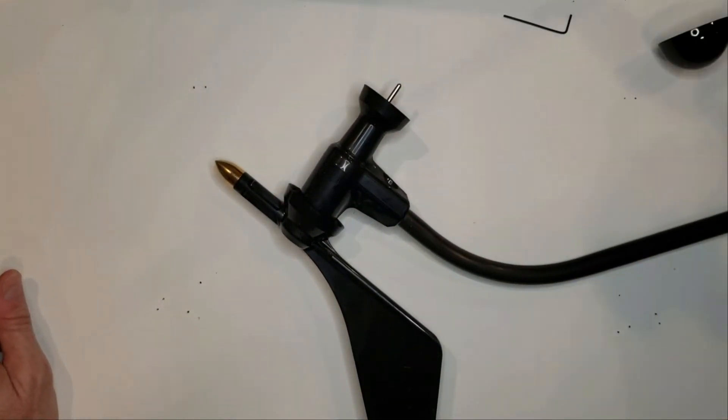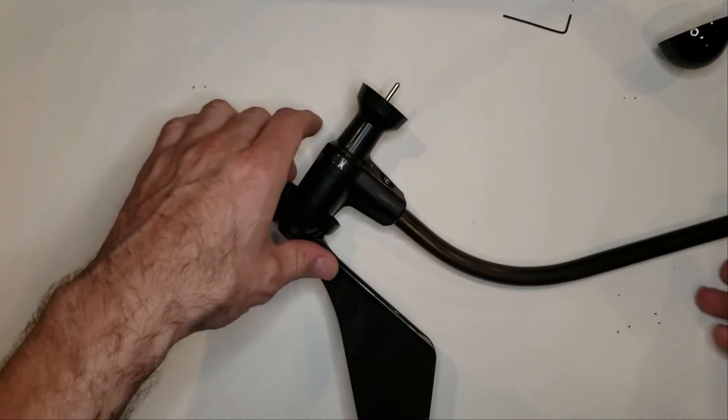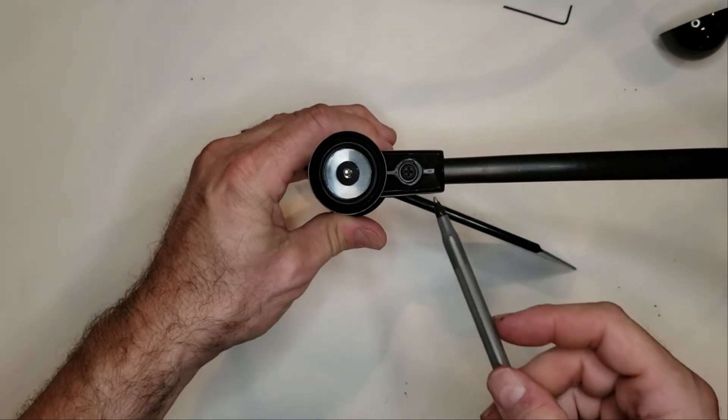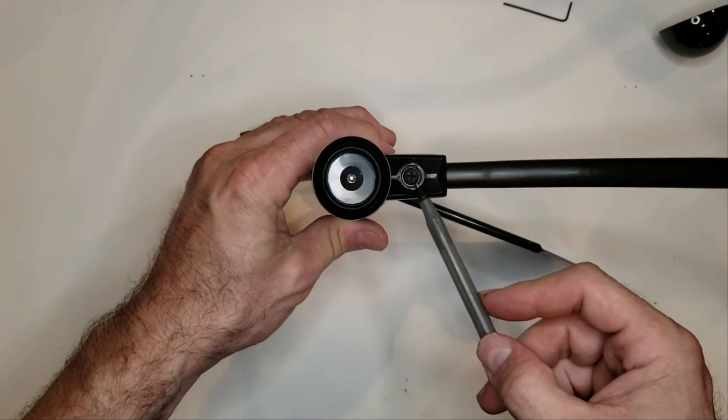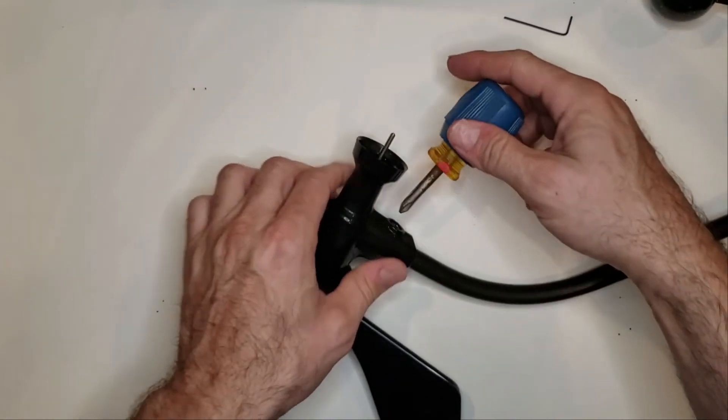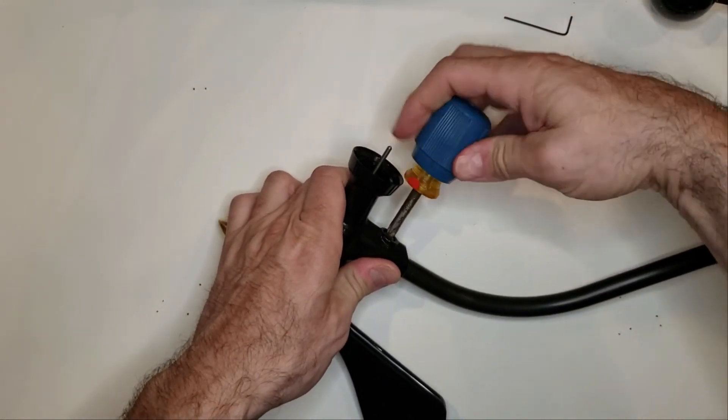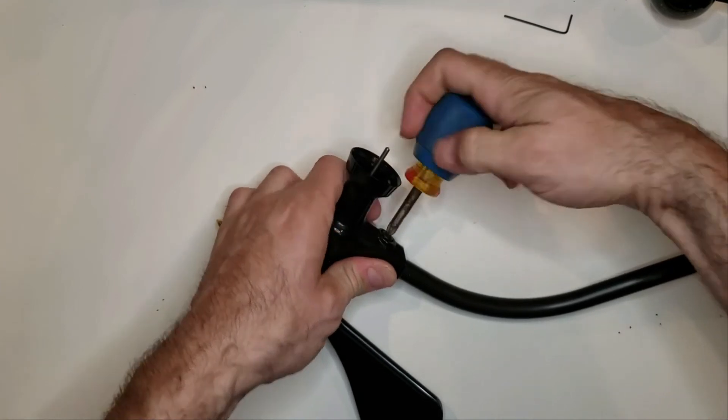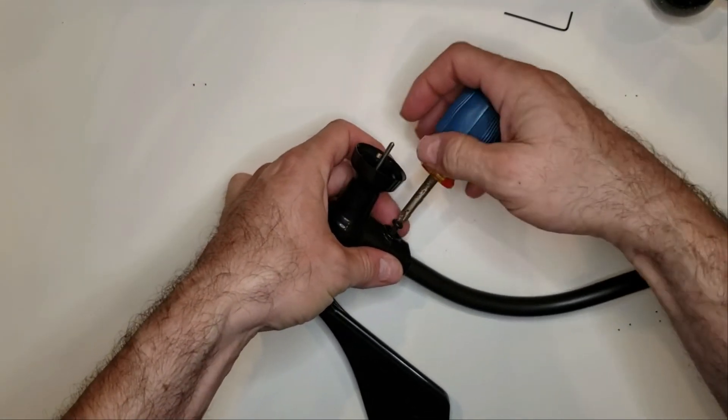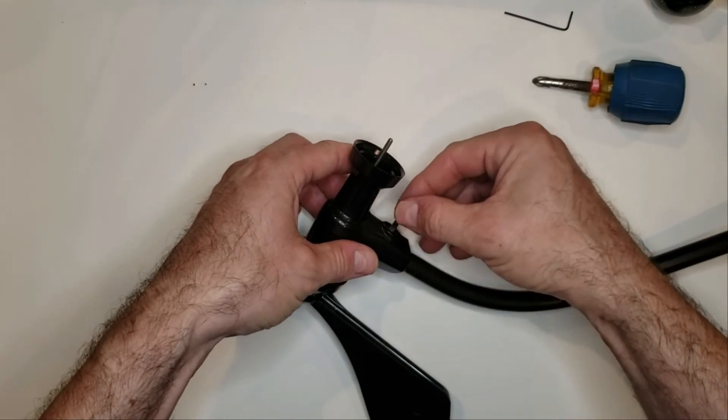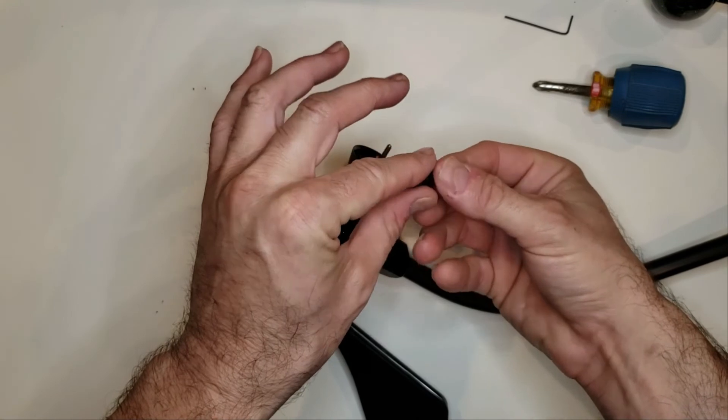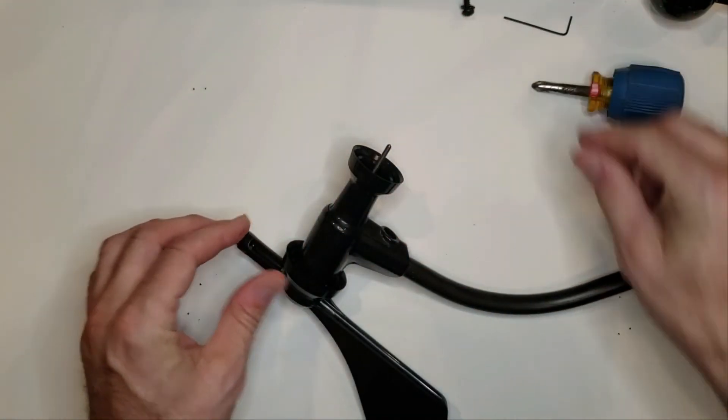The only thing left for us to do at this point is to remove this one Phillips head screw. Counterclockwise and be careful because you don't want to lose the washer. There is a washer. Set that aside.